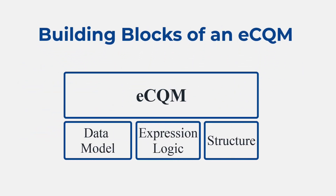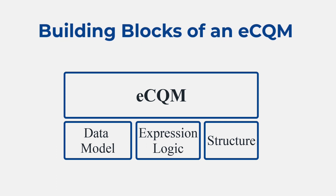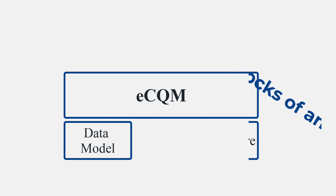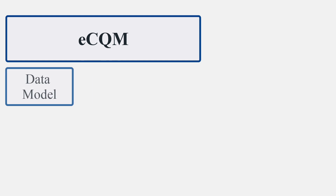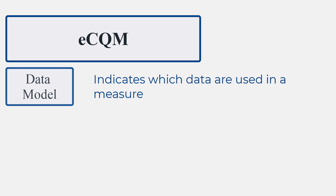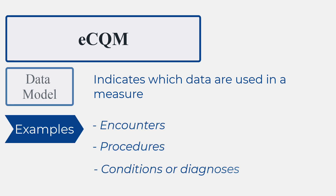This image shows the building blocks of an eCQM. Measures have three main components. A data model. Data models organize and describe the representation of information. For eCQMs, the data model indicates which data are used in the measure. Examples include encounters, procedures, and conditions or diagnoses.